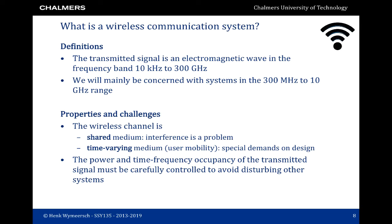Wireless communication systems are characterized by frequency bands ranging from very low frequencies around 10 kilohertz to very high frequencies around 300 gigahertz. In this course we are mainly concerned with systems ranging from 300 megahertz to about 10 gigahertz in carrier frequency. It is important to consider that communication systems below 300 megahertz or above 10 gigahertz are actually behaving differently from what we describe in this course.